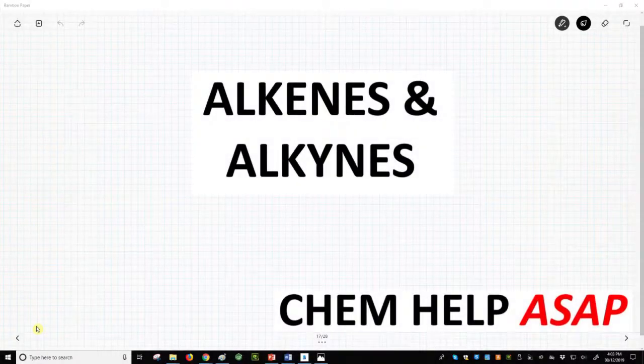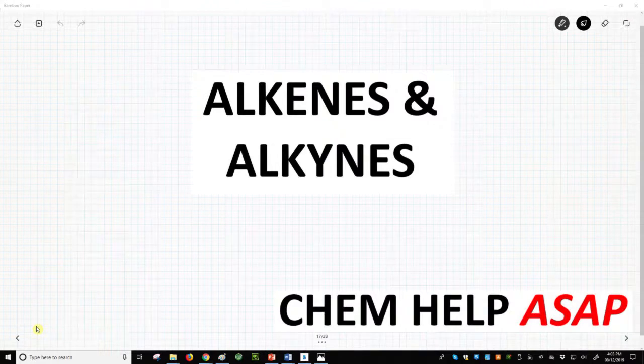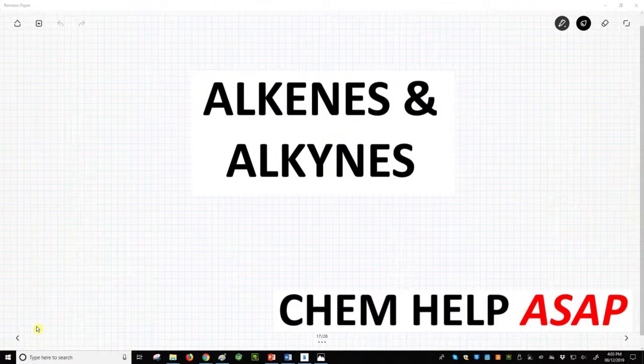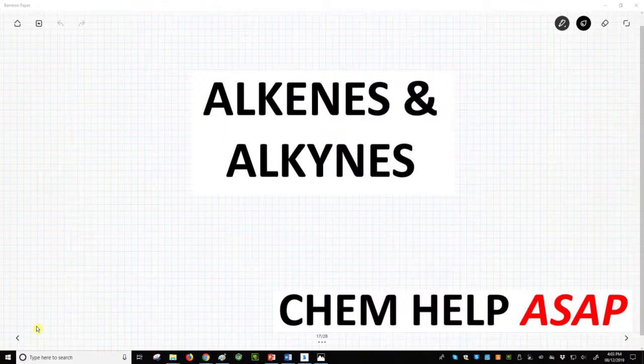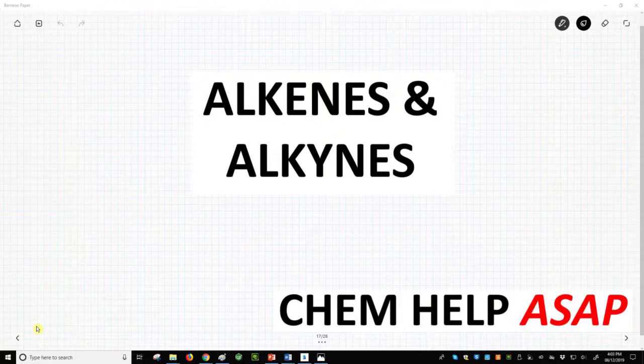Good day from Chem Help ASAP. Alkyl groups are simple carbon chains, but not all carbon chains are alkyl groups. Sometimes carbon chains include double and triple bonds between some of the carbons. Functional groups that contain a carbon-carbon double bond are called alkenes. Functional groups that contain carbon-carbon triple bonds are called alkynes.